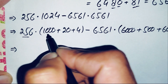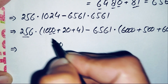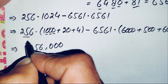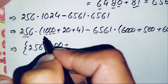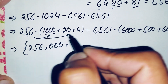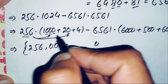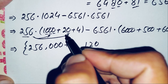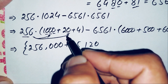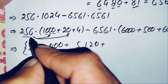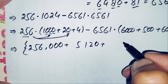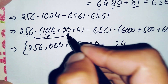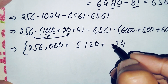For 256 times 1024: 256 times 1000 is 256,000; 256 times 20 is 5,120; 256 times 4 is 1,024. Adding these three partial products gives 262,144. So 256 times 1024 equals 262,144.